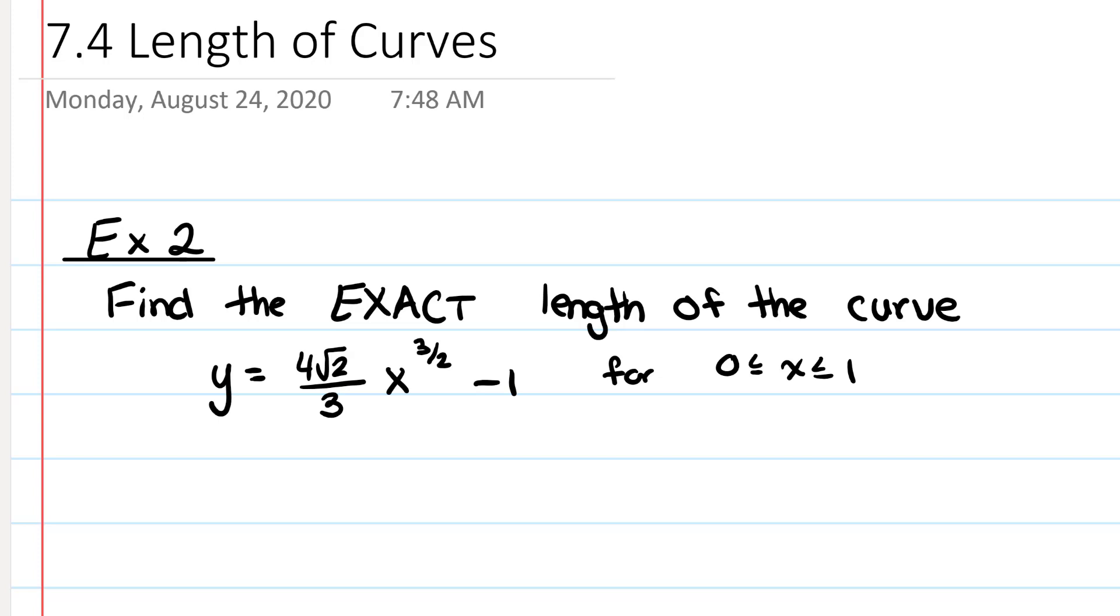7.4 example 2. We're going to find the exact length of the curve y equals 4 radical 2 over 3 times x to the 3 halves minus 1 for x between 0 and 1.